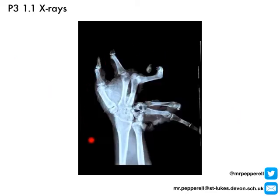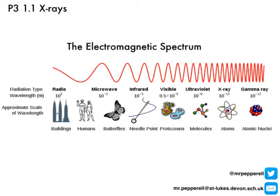We've all seen images like this one before and we know that they're produced by x-rays and we know that they can be useful in showing us broken bones. This is an x-ray of someone's hand after they were holding a firework when it went off, and you can see what it's done to the bones in their hand. What we need to actually understand is how and why these images are produced. So firstly, what is an x-ray?